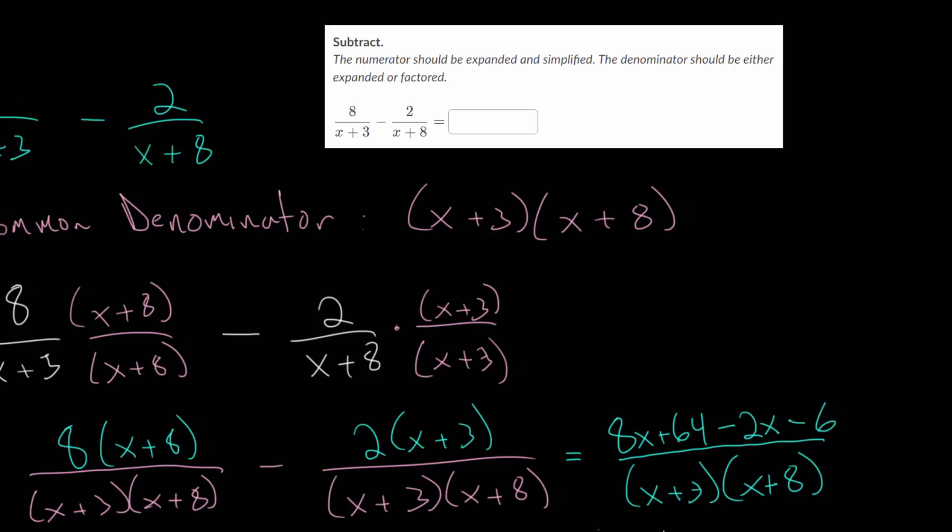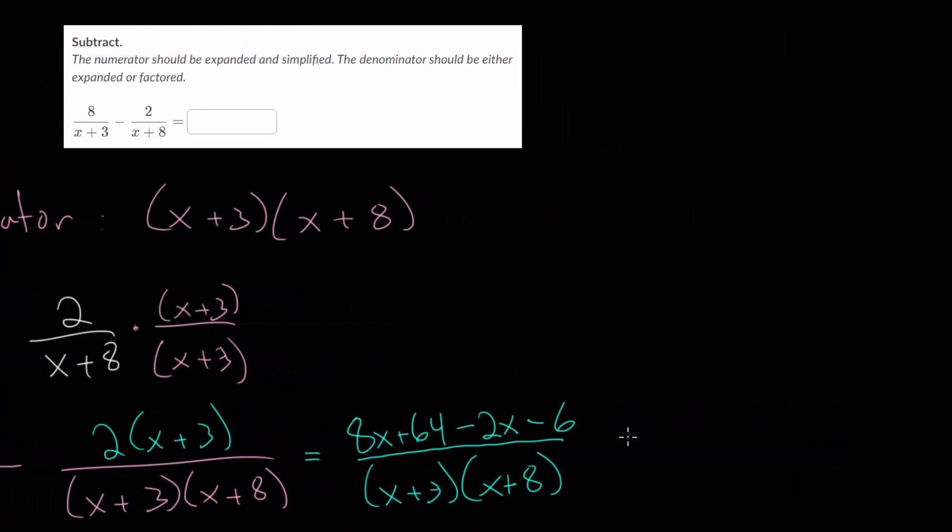So now, simplifying our numerator, we would have that 8x minus 2x is 6x. And 64 minus 6 would be plus 58. And our denominator, we can just leave the same. Or if you want, you can expand it. So multiplying it out, you'd get x squared plus 3x plus 8x, which is 11x. And 3 times 8 is 24.